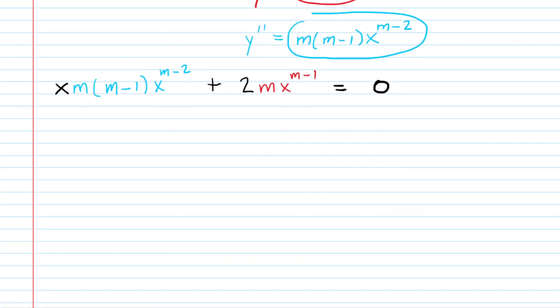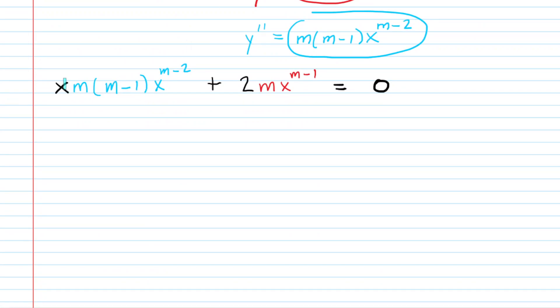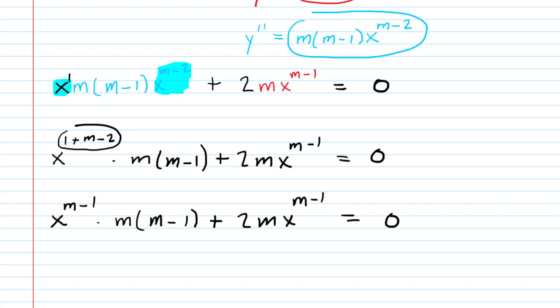We have gone ahead and plugged in those derivatives, and now we want to simplify this differential equation. If we look carefully at the first term, we have x to the power of one multiplied by x to the power of m minus two. Recall that when we multiply those two values, we add the exponents. So we have x to the power of one plus m minus two. We can simplify this power by adding one and negative two, which gives us x to the power of m minus one.